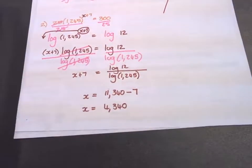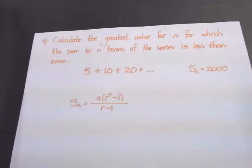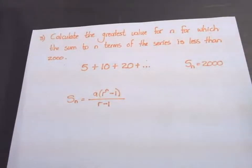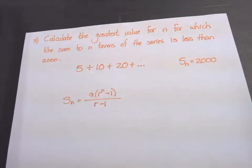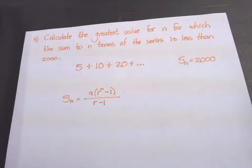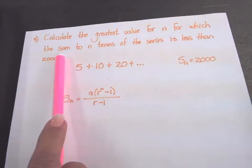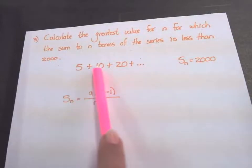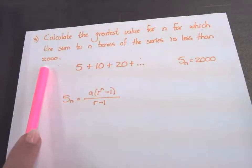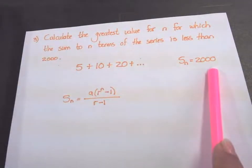Our next example is to show you that you can also use logs in number patterns. They say that we have a series: 5 plus 10 plus 20. What is a series? A series has pluses. And they want you to calculate the value for n, the term number, for which the sum of the series of n terms is less than 2000. So my sum will be 2000 or less.